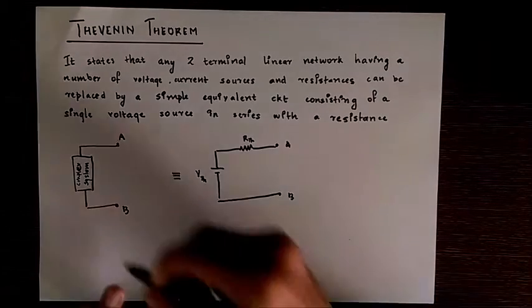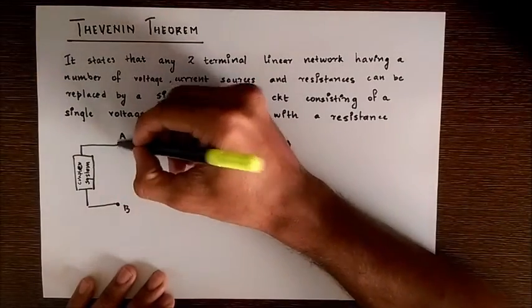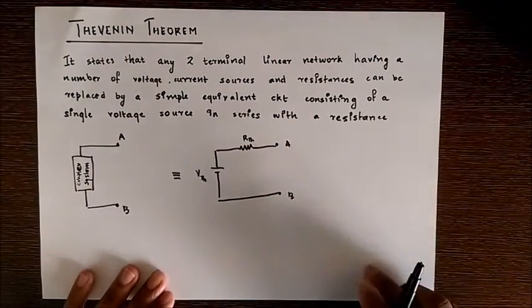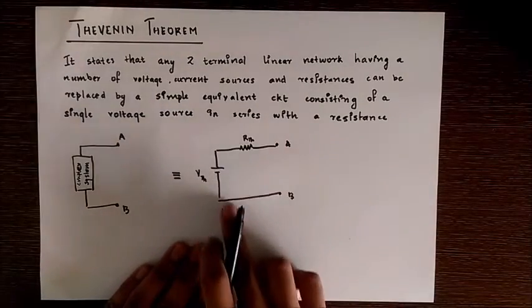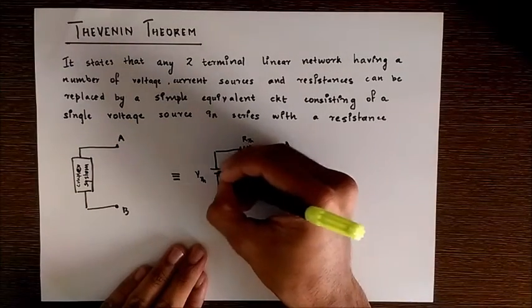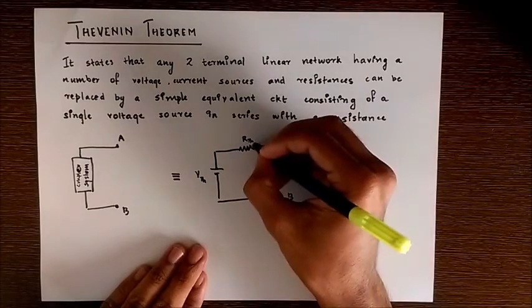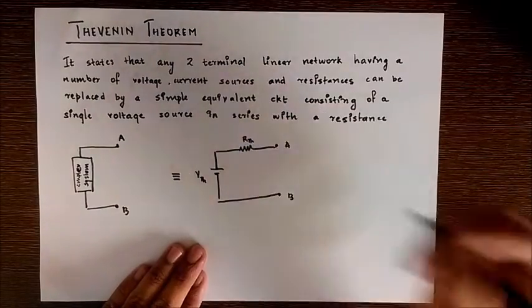So if we have a complex system with two terminals A and B like this, we can replace it with an equivalent circuit having a voltage source Vth, V-Thevenin, in series with Rth or R-Thevenin.